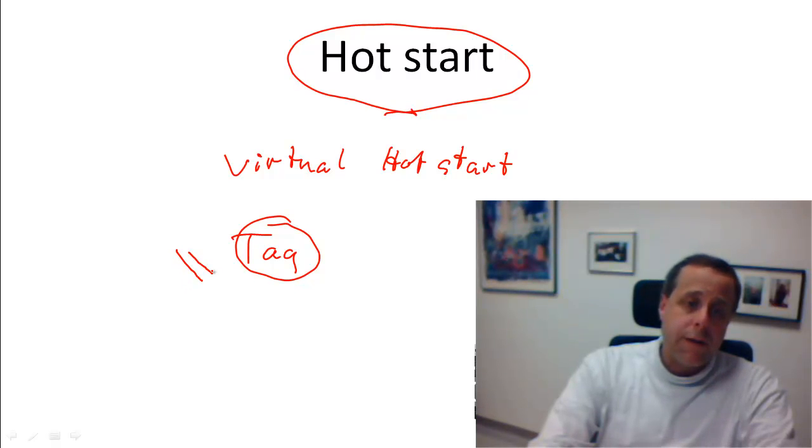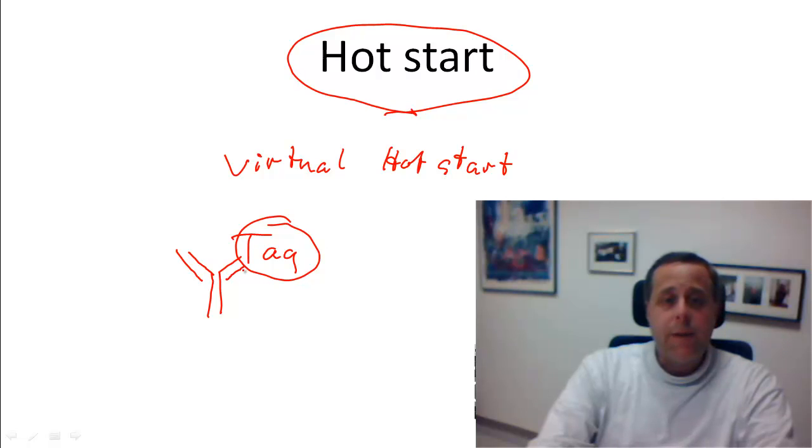So how can you do that? Well, some people like to use an antibody, something like that, that would bind to Taq polymerase, and not just anybody, it would bind to the active center of Taq. In that way it would keep Taq inactive.